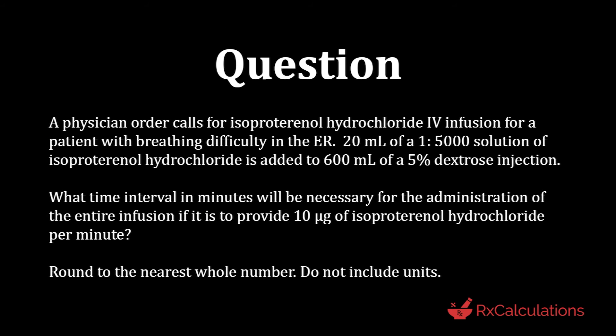This question says a physician order calls for isoproterenol hydrochloride IV infusion for a patient with breathing difficulty in the ER. 20 milliliters of a 1-in-5,000 solution of isoproterenol hydrochloride is added to 600 milliliters of a 5% dextrose injection. What time interval in minutes would be necessary for administration of the entire infusion if it is to provide 10 micrograms of isoproterenol hydrochloride per minute? Round to the nearest whole number; do not include units.